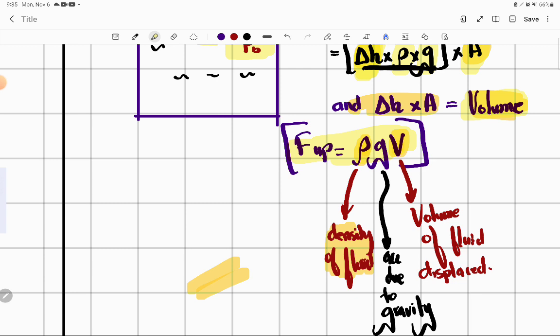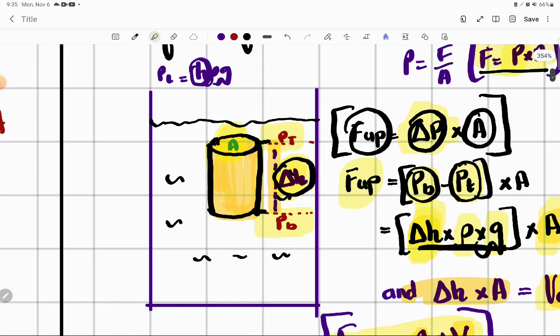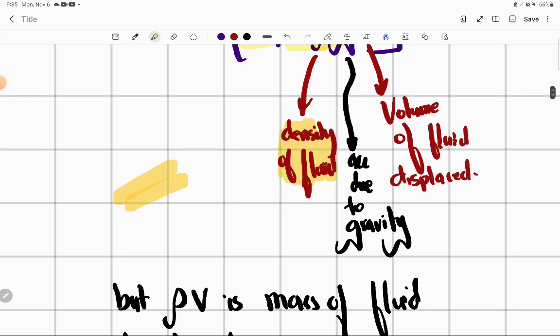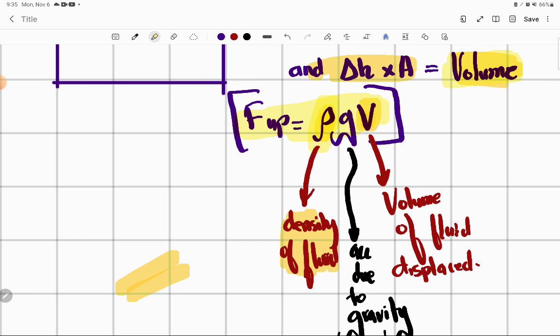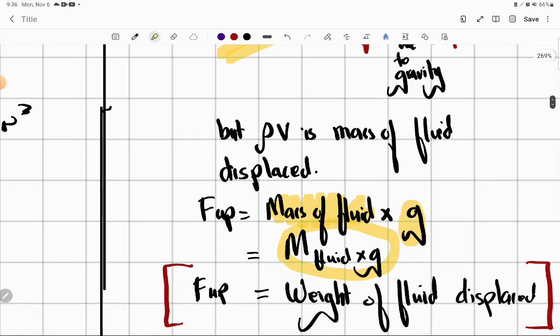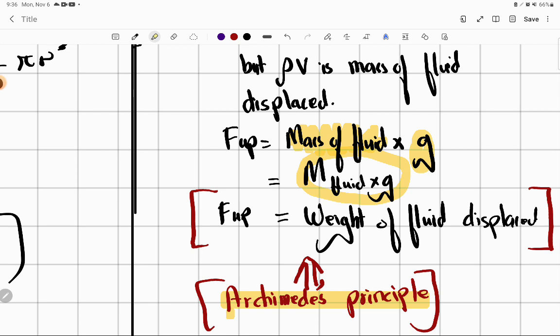Finally when I rearranged this, I can write it this way: F upthrust is equal to ρgV. Is that clear? This volume that came - this is the volume of liquid that was displaced. When you put this cylinder in, it will displace water. The density will also be of the liquid. If this volume of liquid is displaced and I multiply by liquid density, what will come? Mass of liquid displaced. Mathematically, mass into gravity equals weight. Indirectly we arrived at Archimedes principle: upthrust is equal to weight of the fluid displaced. This is known as Archimedes principle.